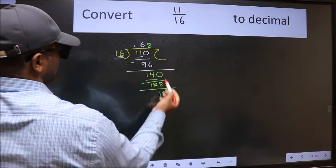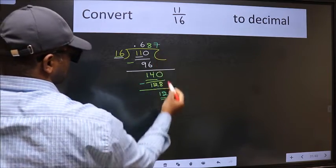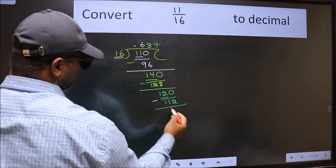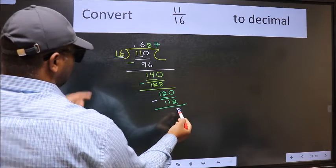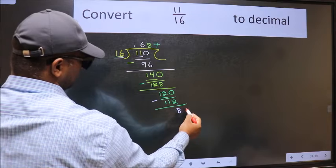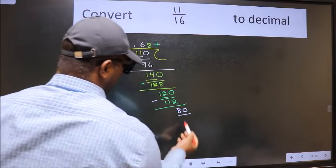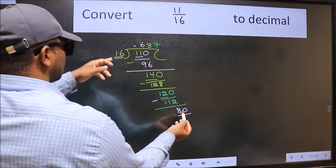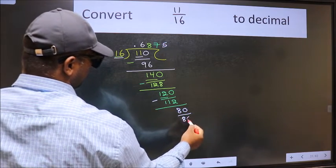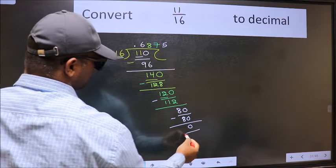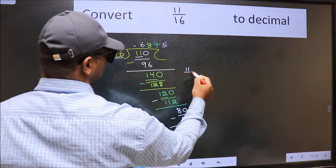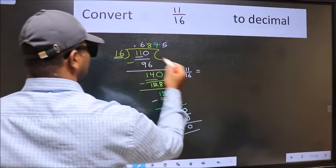8 is smaller than 16 and we already have the decimal, so directly take 0, making 80. In the 16 table, 16×5=80. Now we subtract and get 0. Therefore, the decimal of 11/16 is complete.